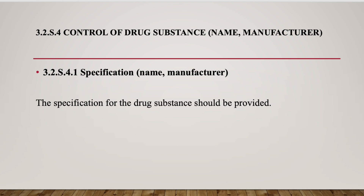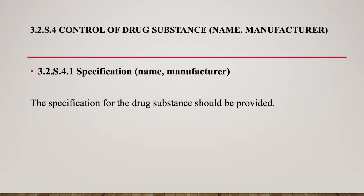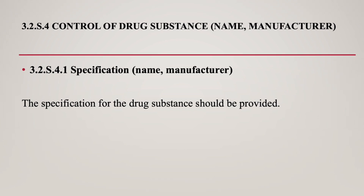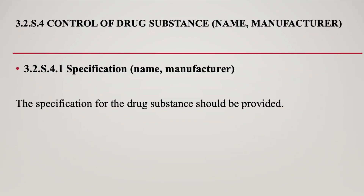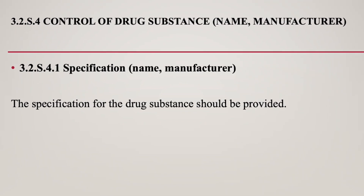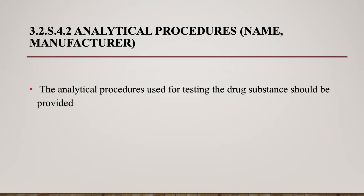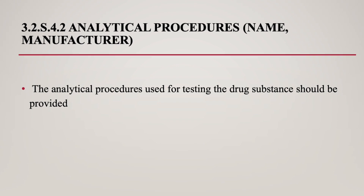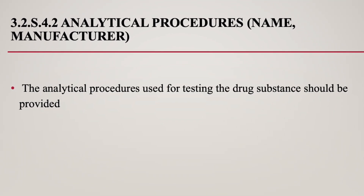3.2 S.4 Control of Drug Substance. Name, manufacturer. 3.2 S.4.1 Specification — name, manufacturer — the specification for the drug substance should be provided. 3.2 S.4.2 Analytical Procedures — name, manufacturer — the analytical procedures used for testing the drug substance should be provided.